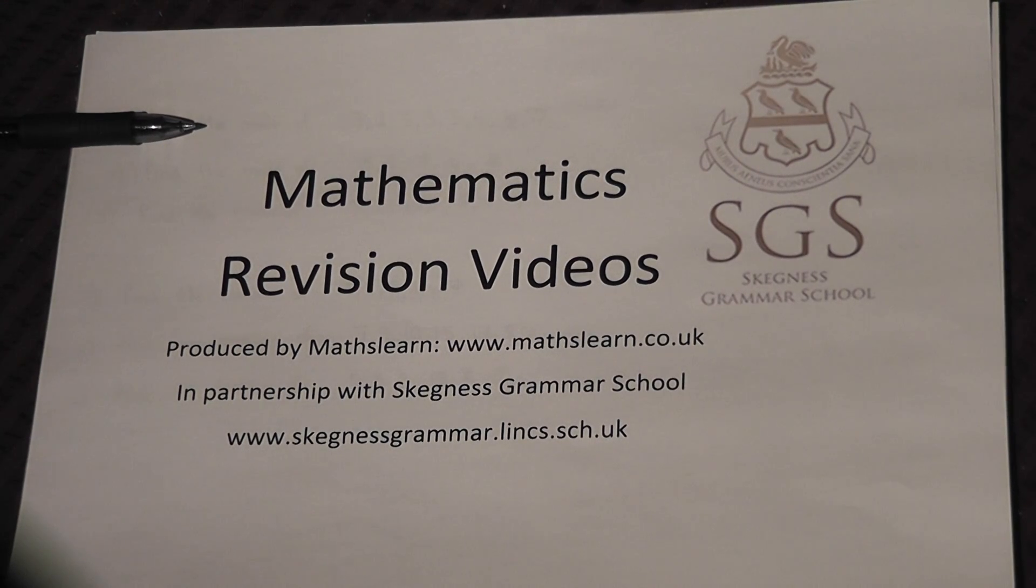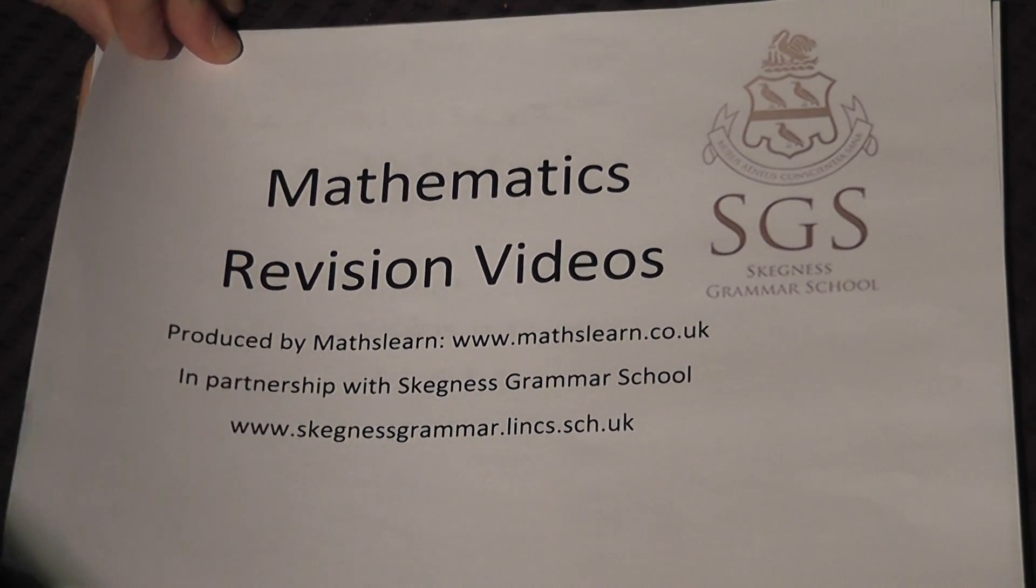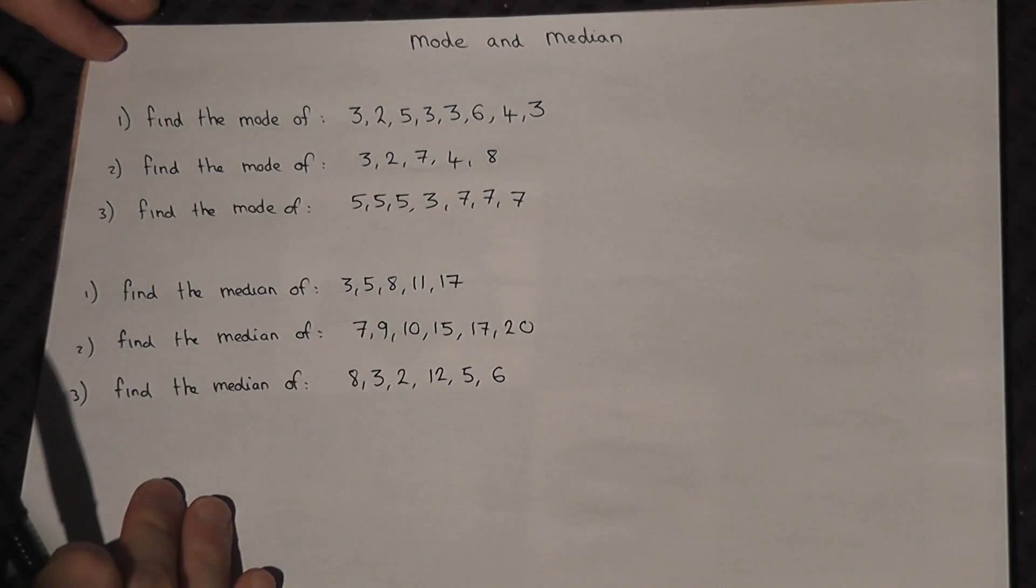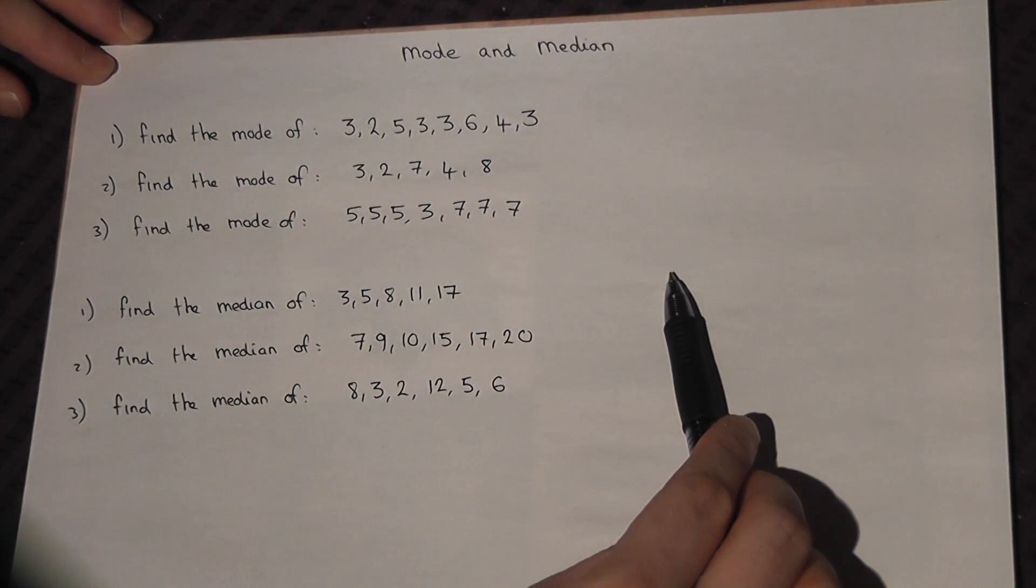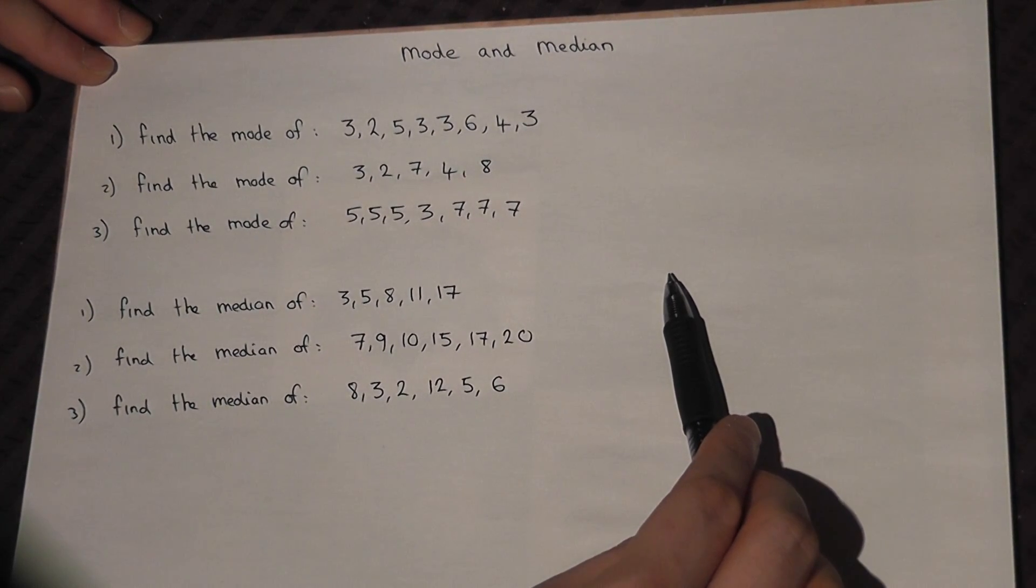This shows how you can find the median and the mode for sets of data. We'll look at the mode first. The mode is a very simple way of getting an average for some data.